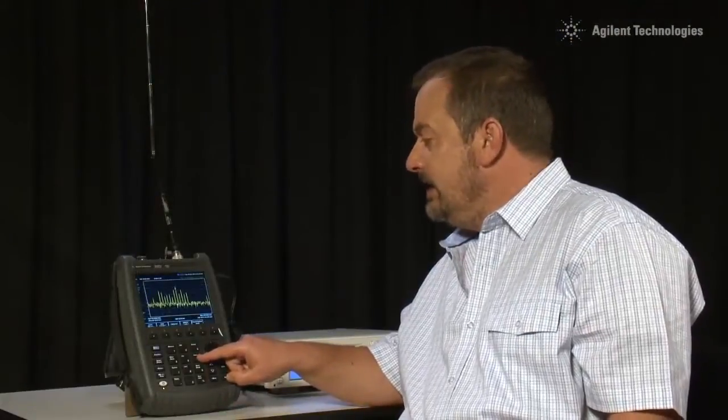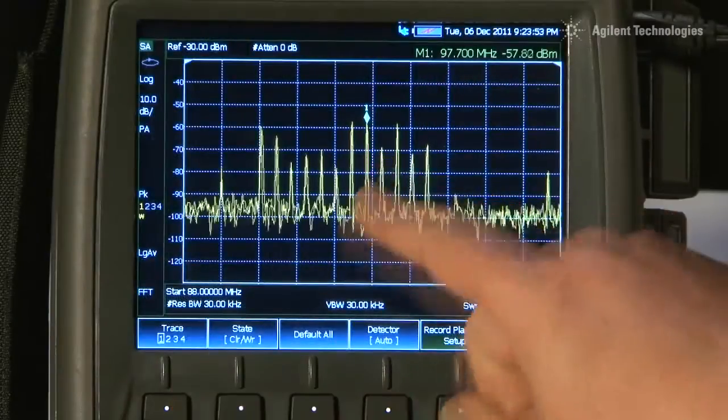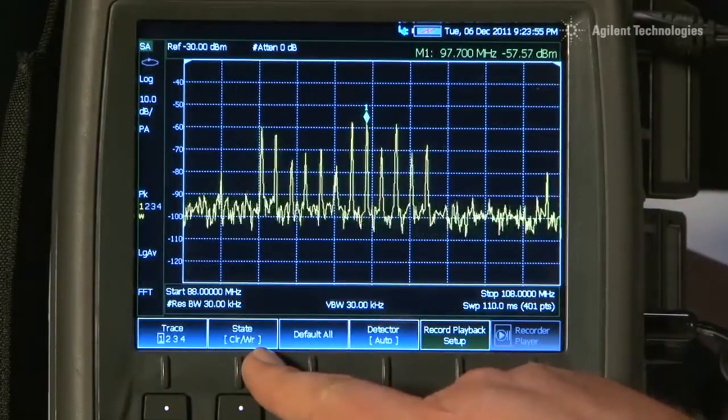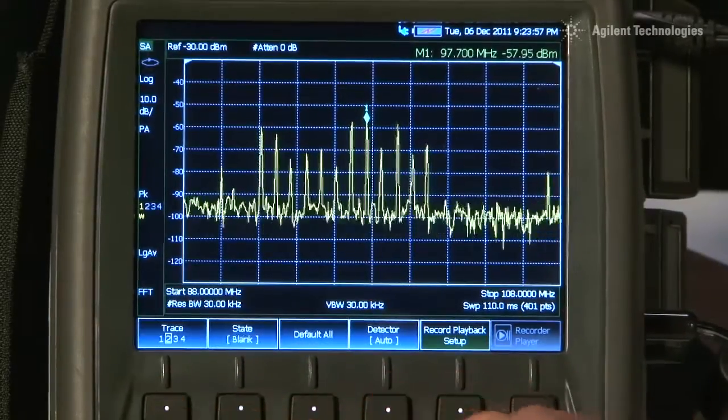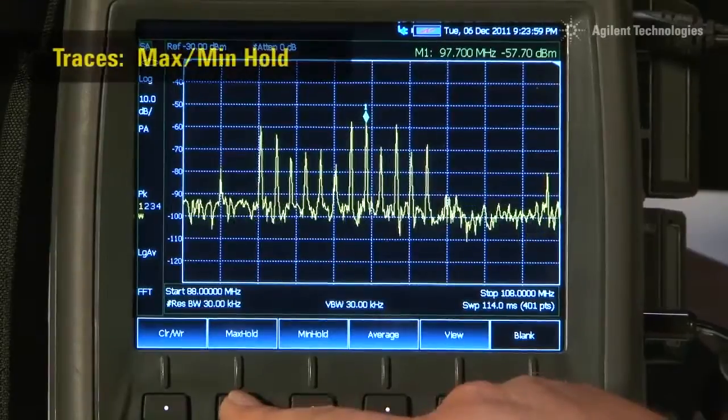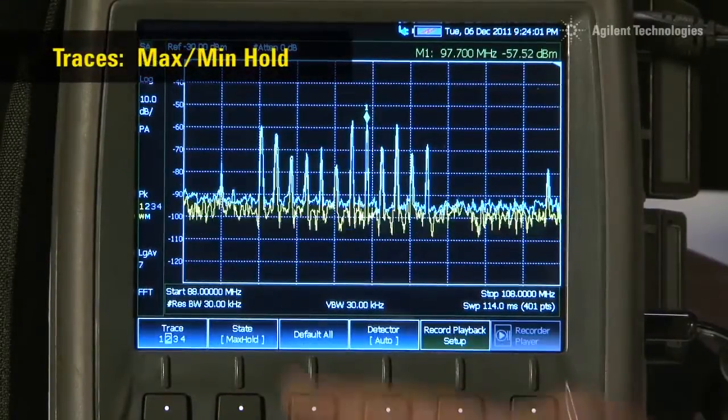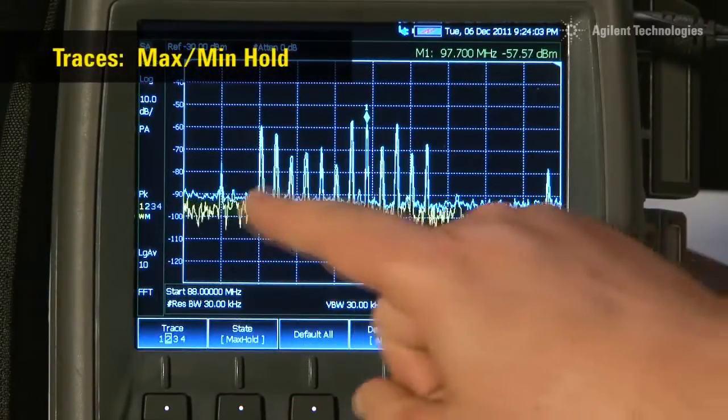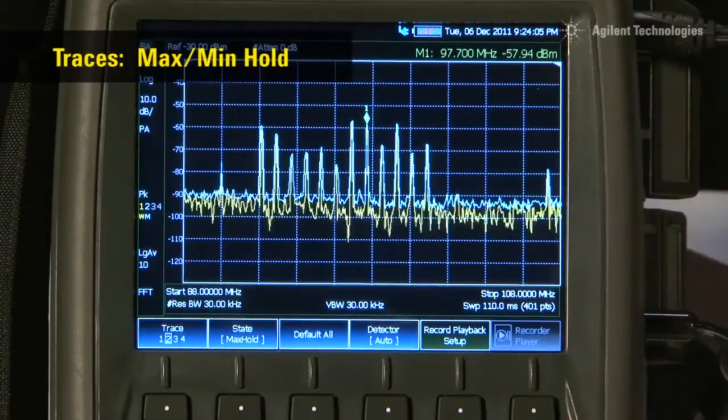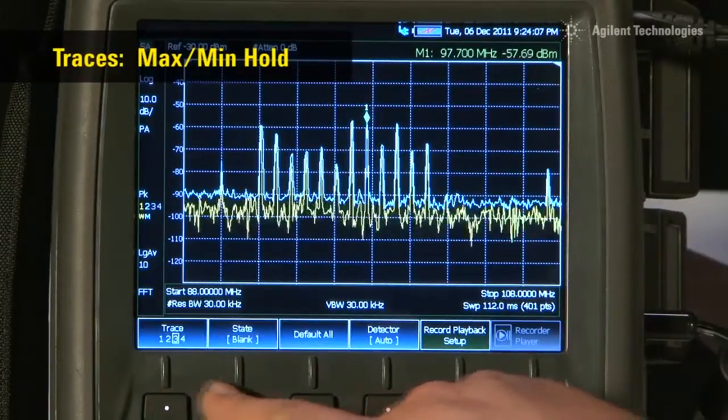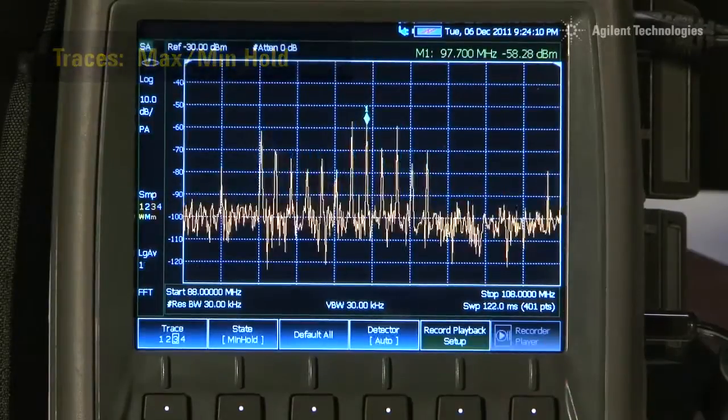If I press the trace button, you can see that trace 1 is here in yellow, performing a clear write operation. If I select trace 2, currently set to blank, but set it now to max hold, you will see in the blue or white trace it is storing the maximum value of the signal, and we have got two more traces. Let us turn on trace 3 and set that to min hold.